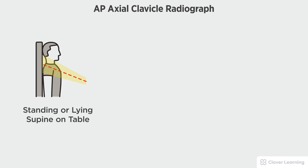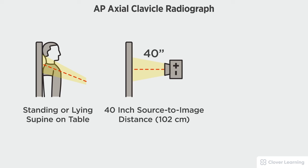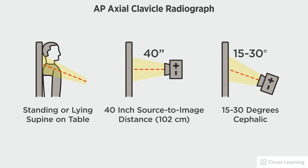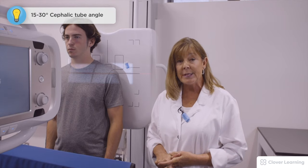In this view we will be demonstrating the AP axial clavicle. The AP axial clavicle should be performed with the patient standing at the upright bucky or lying supine on the radiographic table with a 40-inch source to image distance and the tube angled 15 to 30 degrees cephalic, depending on the patient's body habitus.